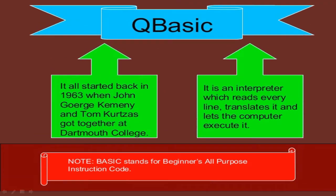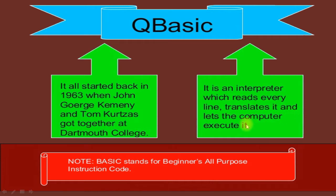Quick Basic stands for Beginners All-Purpose Symbolic Instruction Code. It started in the year 1963 when George and Tom got together at Dartmouth College. This language is an interpreter, which reads every line, translates it, and lets the computer execute it line by line.